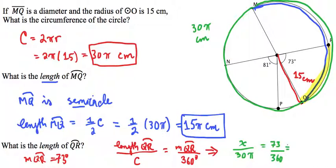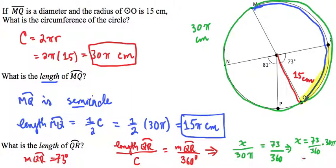And then we work all this out. We multiply both sides by 30π. So we get 73 over 360 times 30π. And that will give us the answer that we're looking for here. We'll reduce down to 73π over 12.